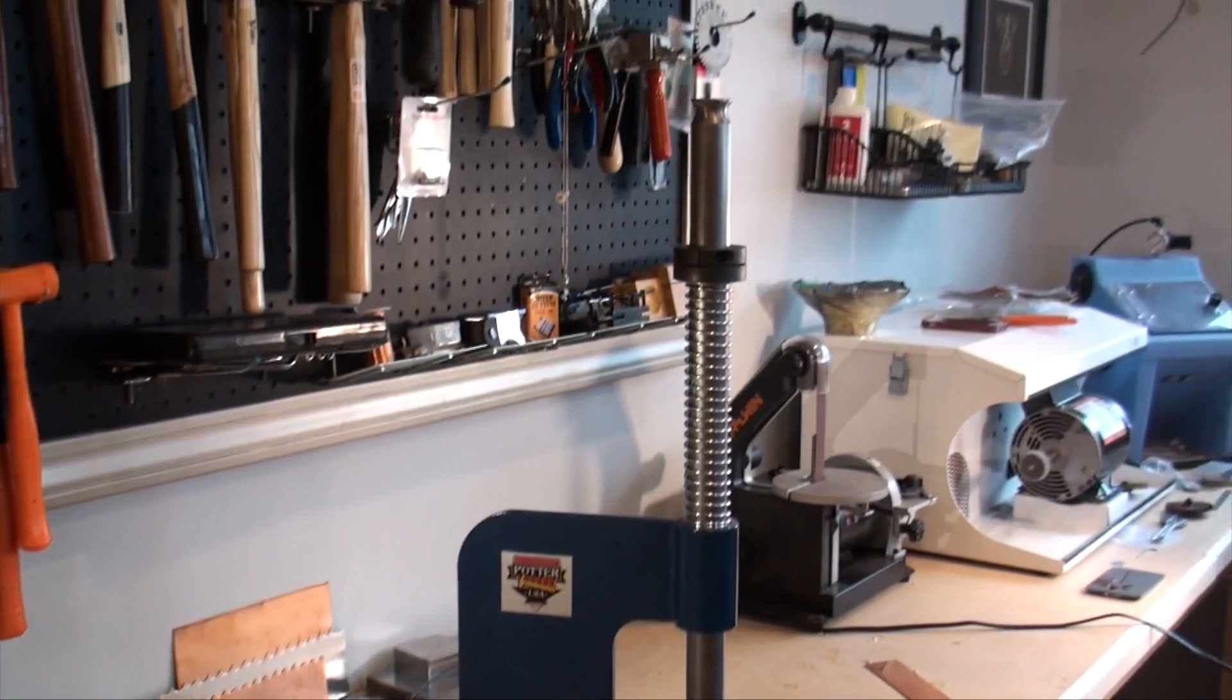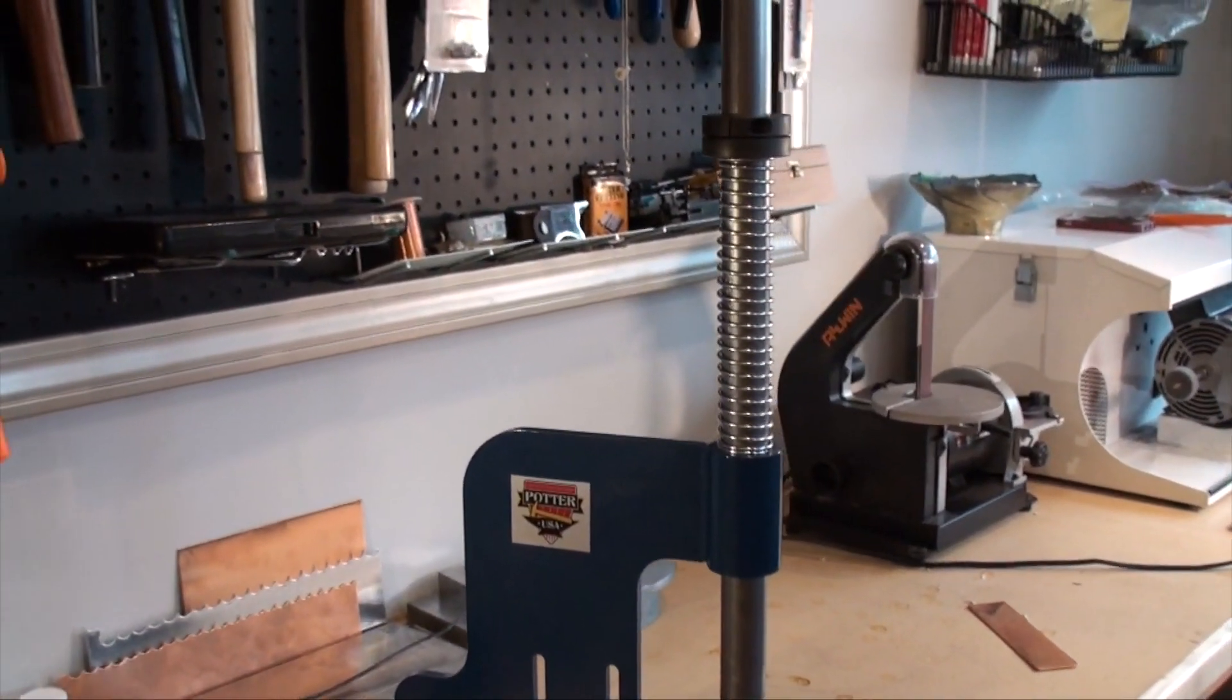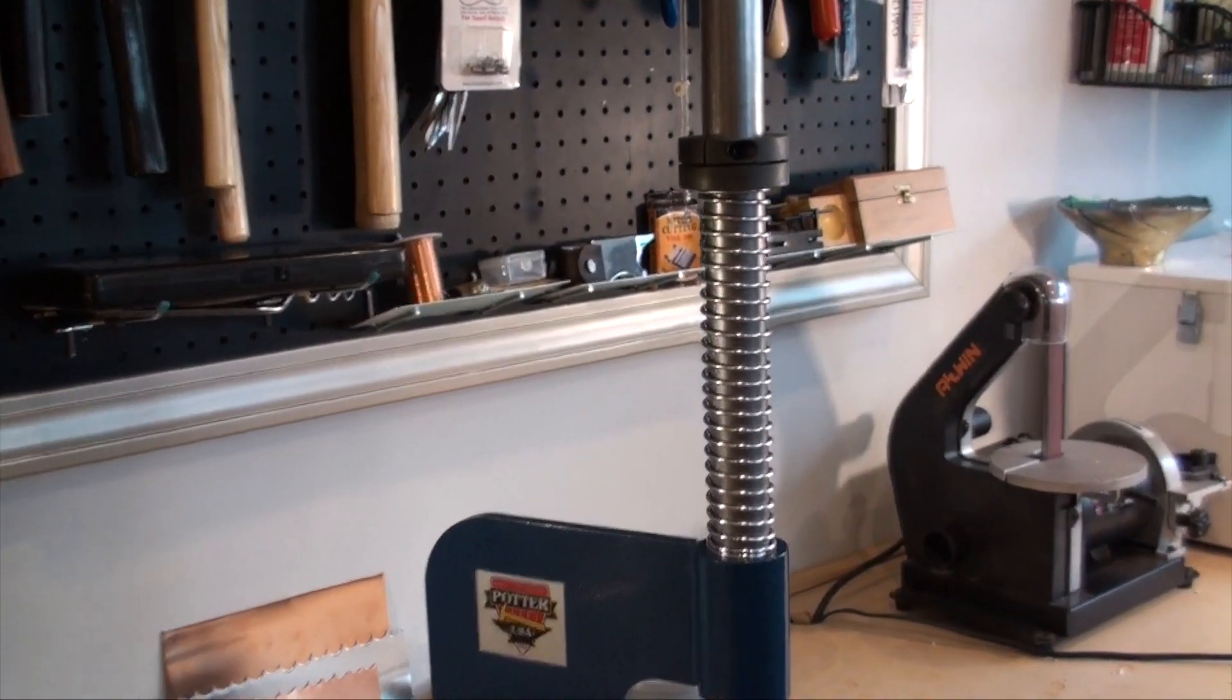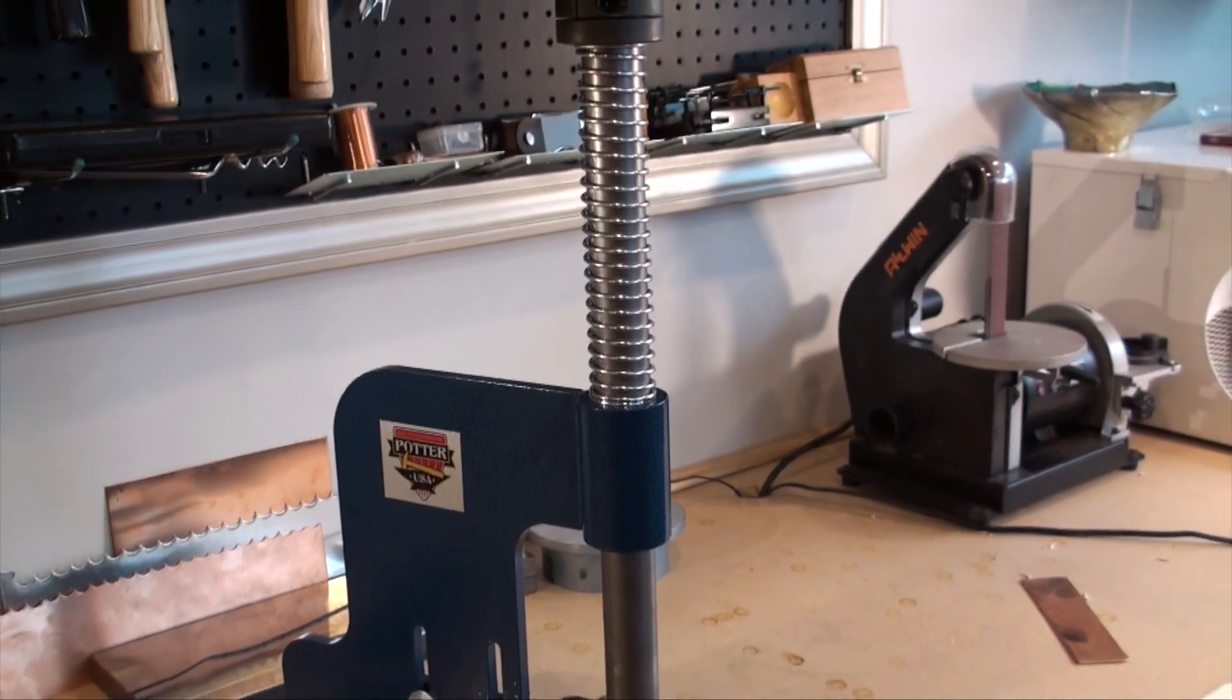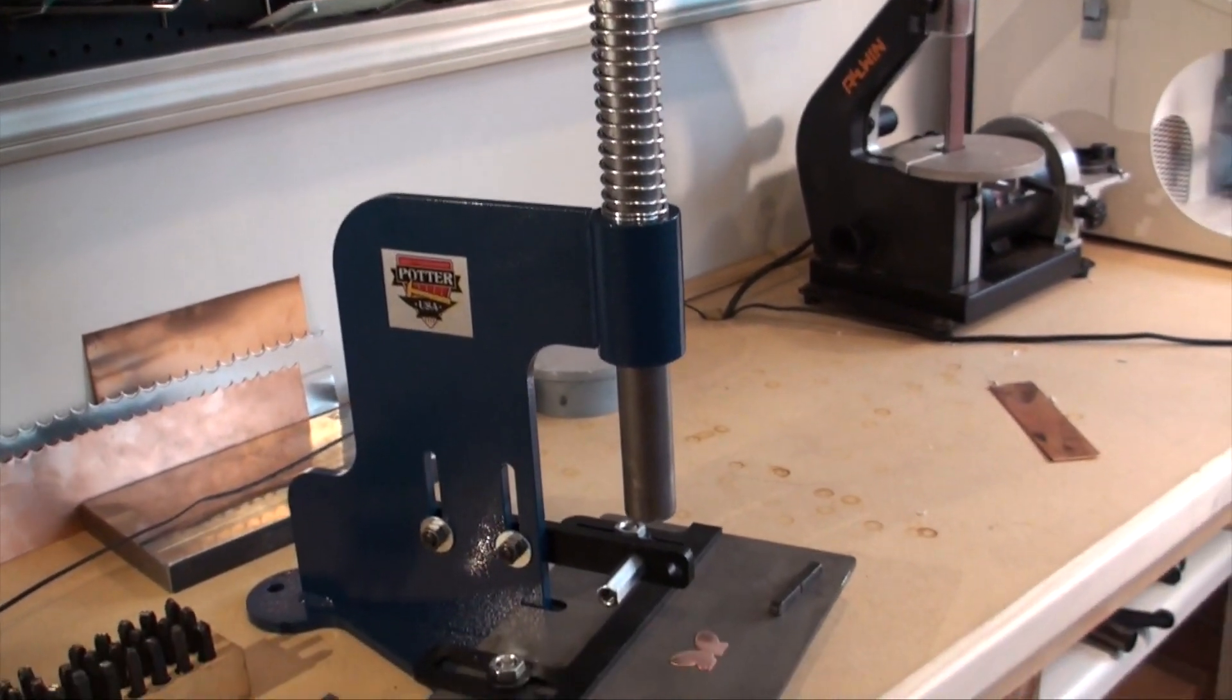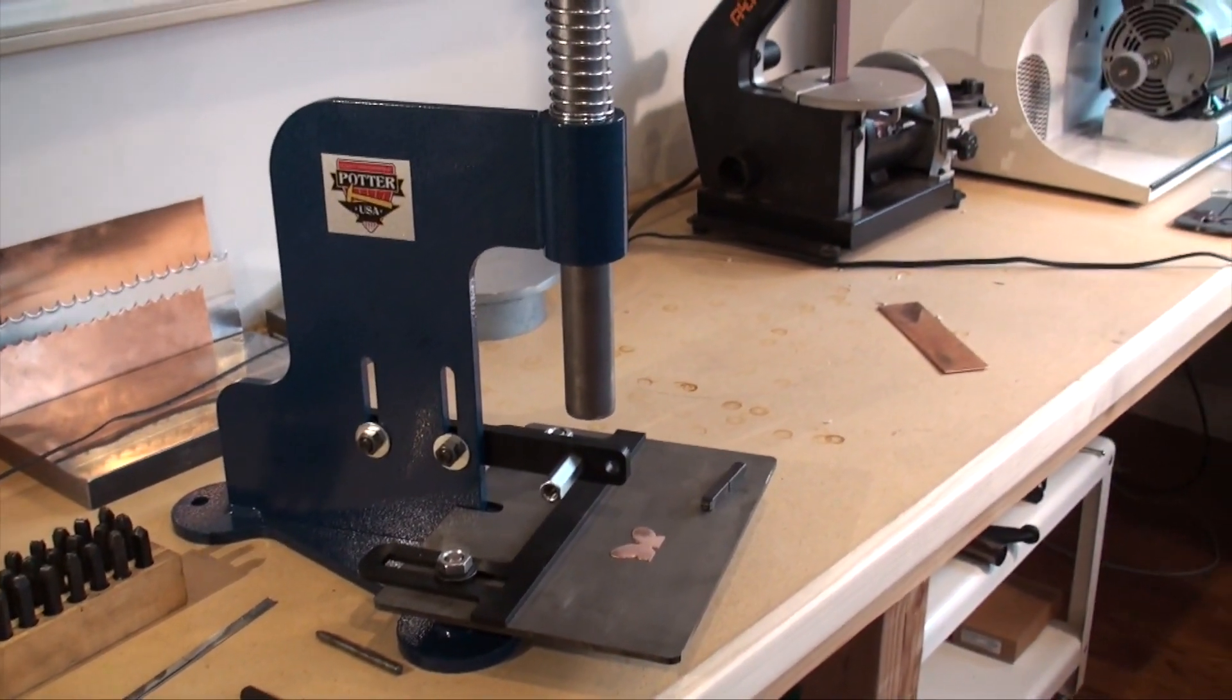So you'll see here we've got this large ram or this bar here, and you'll notice that it also has the springs on it and it has also a retaining ring. This makes it so that you can adjust your stamping to make it a little harder, a little lighter. And I'm also going to show you how to use it as a drop hammer.